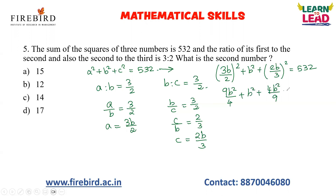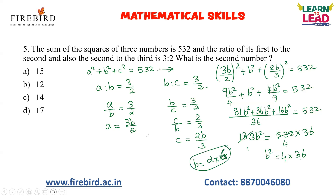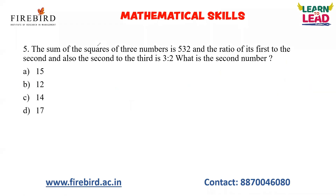Expanding: 9b²/4 + b² + 4b²/9 = 532. The LCM of 4 and 9 is 36. Multiplying through: 81b² + 36b² + 16b² = 532 × 36, giving 133b² = 532 × 36. So b² = 4 × 36 = 144, meaning b = 12. The second number is 12. In this equation there are three unknowns, and with the given data you can form three different equations. I hope you all got some information about how to solve these types of questions.